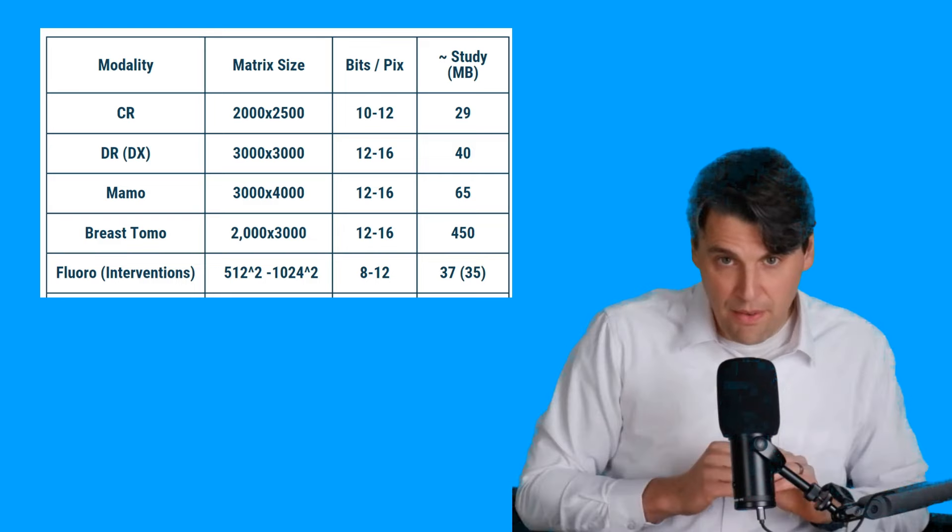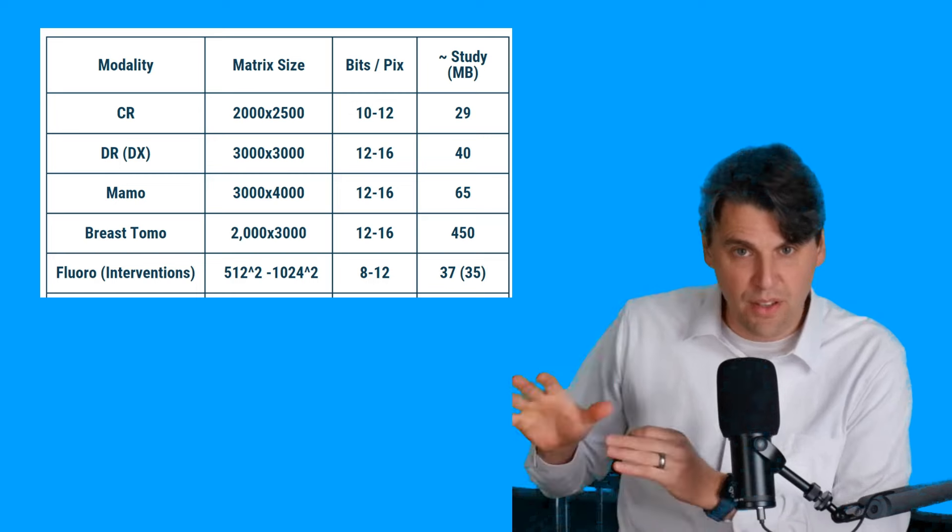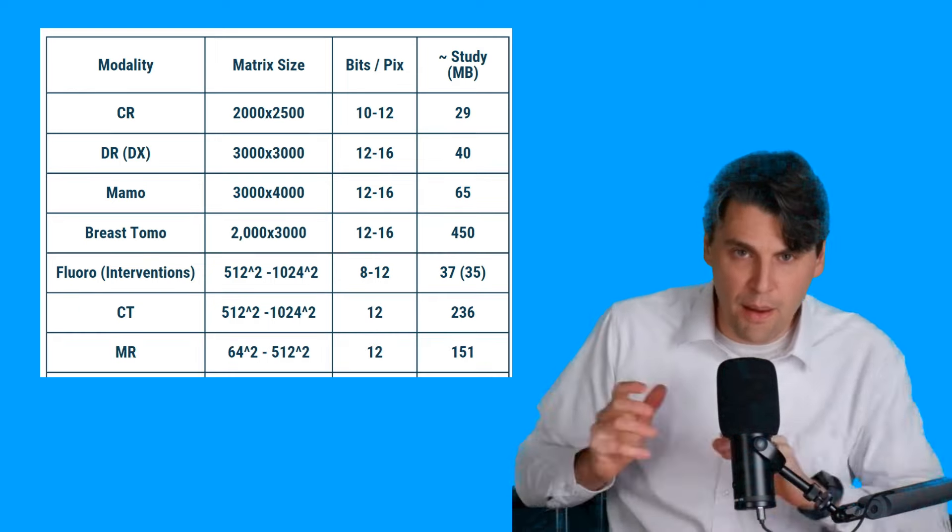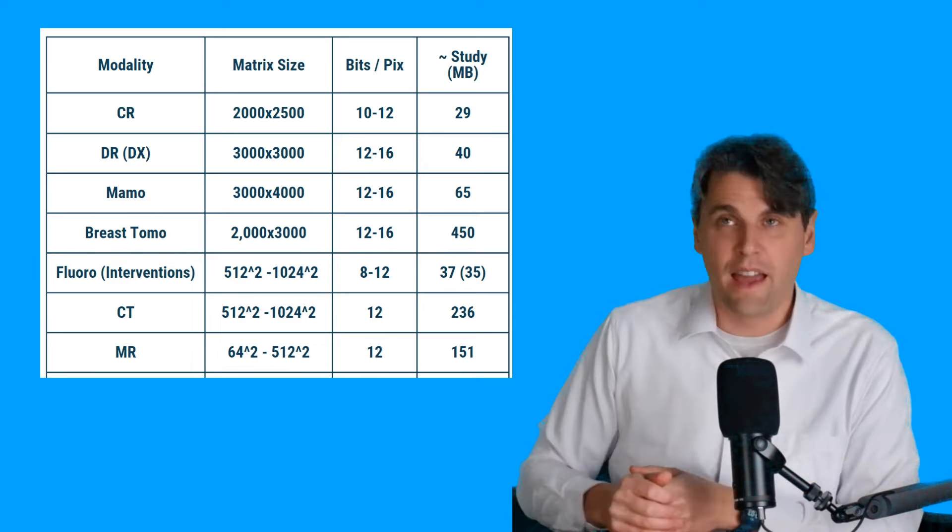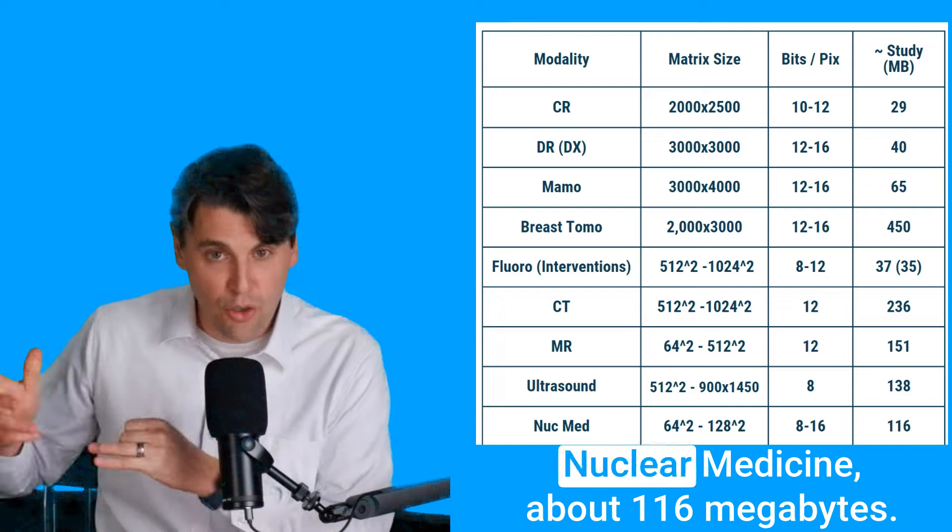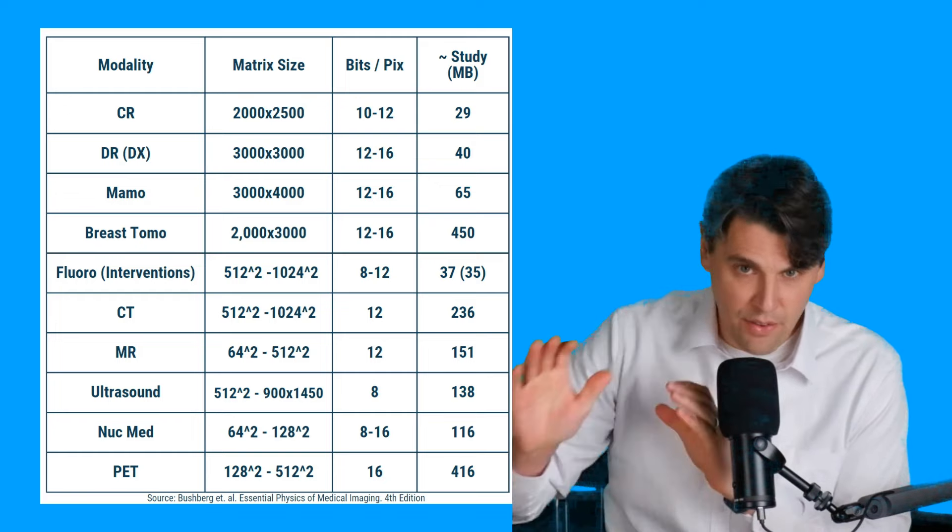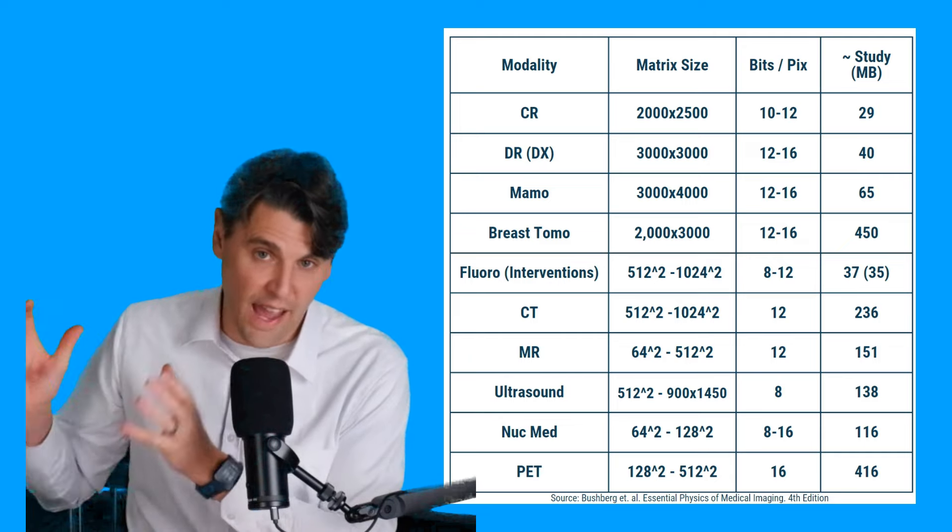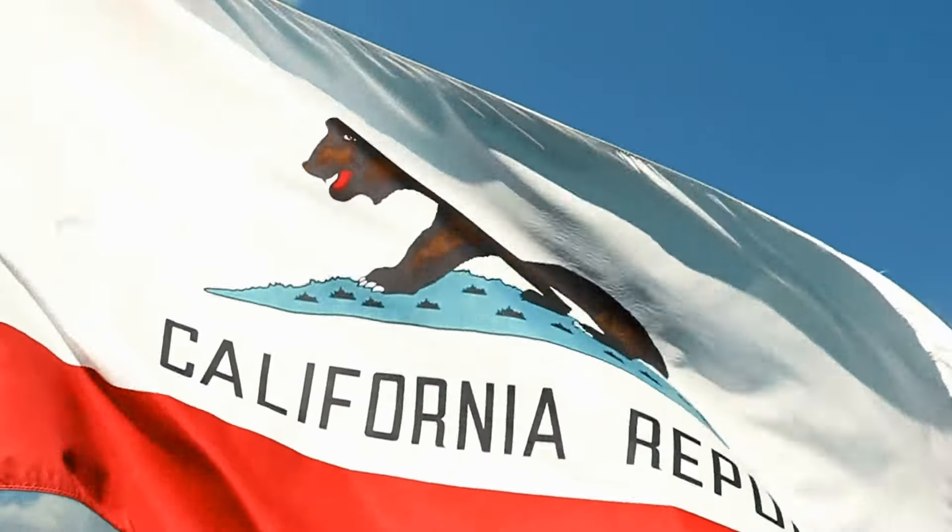Then CT, the standard has been for years of using a 512 matrix, but it's starting to go up now, up to 1024 matrices being more common. And then on average, over 200 megabytes per study. MRs typically had smaller matrices than CT, but is also increasing the matrix size. A typical set would be about 50 megabytes. Ultrasound, about 138 megabytes. Nuclear medicine, about 16 megabytes. PET, because there's often more slices, they have a high number of bits per pixel. It's somewhere around 400 megabytes per study. These numbers are from Bushberg. So this is a study they did of the average size of their different exams from their relatively large hospital practice in northern California.